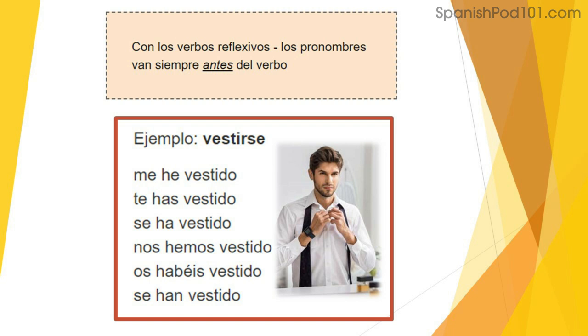Con respecto a mencionar el pronombre personal, recuerda que es un poco ambiguo porque el sujeto ya está mencionado en el verbo. Si quieres usarlo porque es más fácil para recordarlo, no hay problema. Pero la mayoría de los hispanohablantes no mencionamos el sujeto — simplemente decimos "he trabajado" o "has trabajado". ¿Qué pasa con los verbos reflexivos? El pronombre reflexivo va antes del verbo. Por ejemplo, el verbo vestirse: me he vestido, te has vestido, se ha vestido, nos hemos vestido, os habéis vestido, se han vestido.